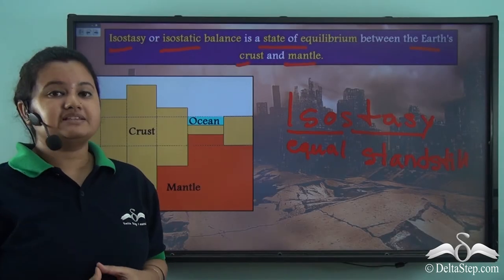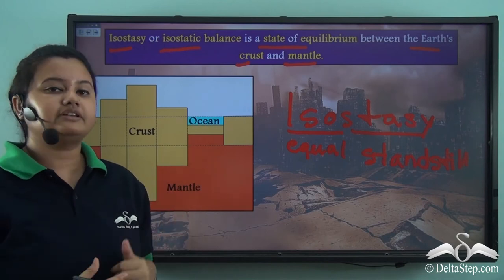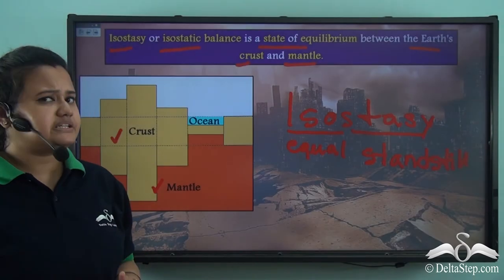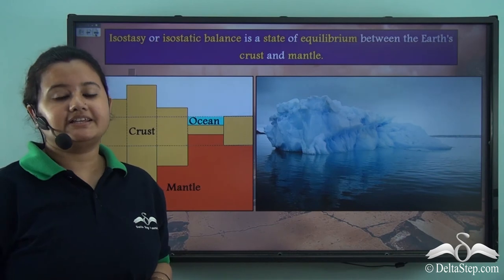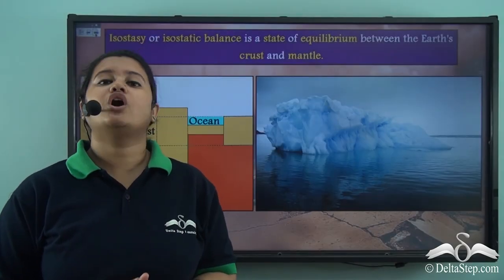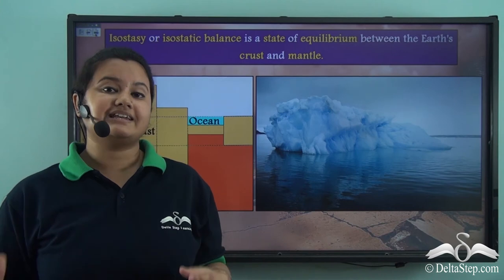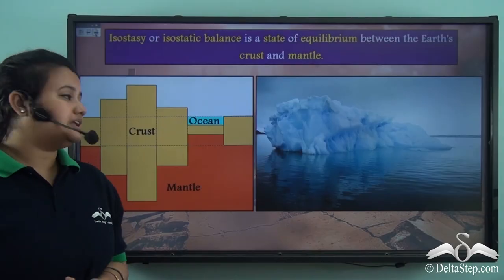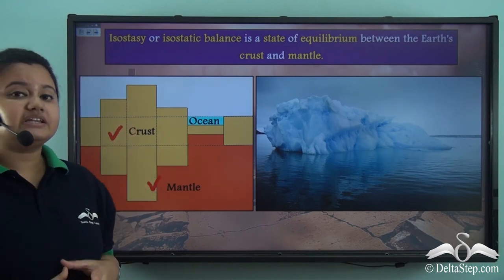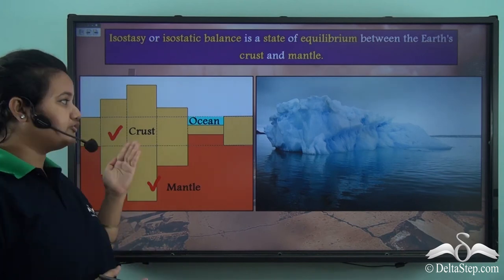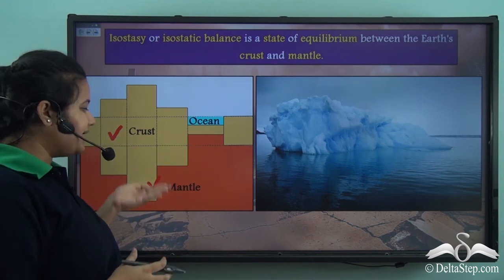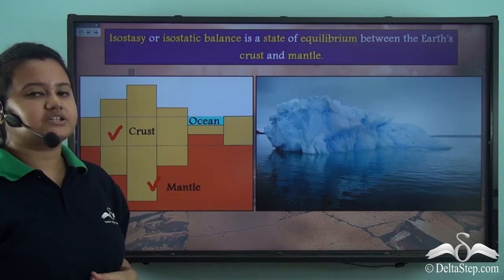Isostatic balance is the balance between two layers of the earth: the crust and mantle. To understand how this balance is maintained, we can consider the case of an iceberg floating on the ocean. An iceberg floats because it is less dense than the ocean. Similarly, the crustal layer floats above the mantle, and the balance between these two layers depends on the density and thickness of the crust. Any change in the density or thickness of the crust affects the balance and induces an earthquake.